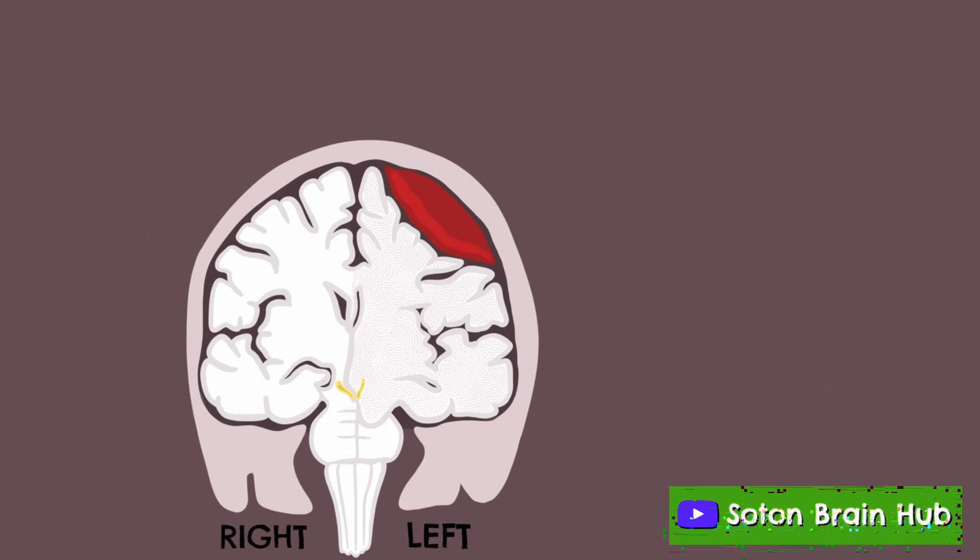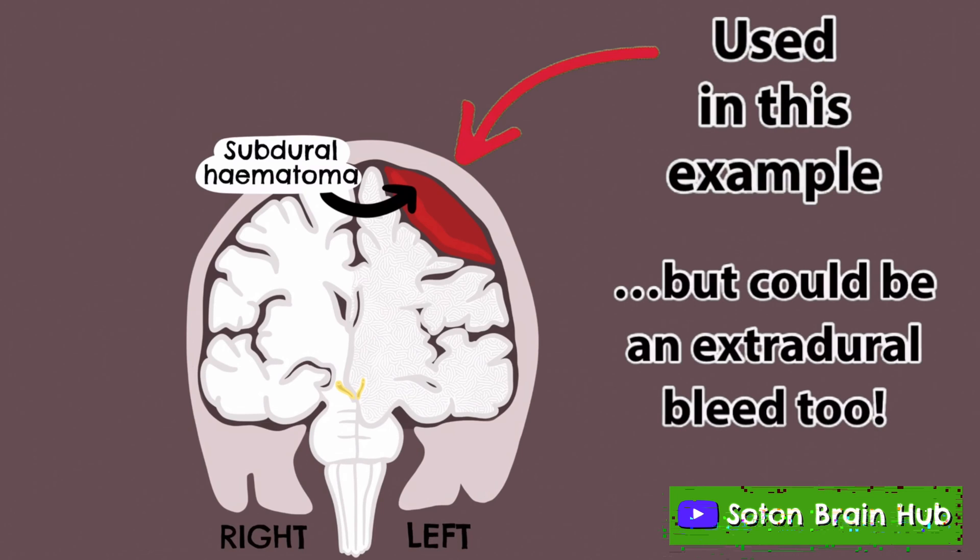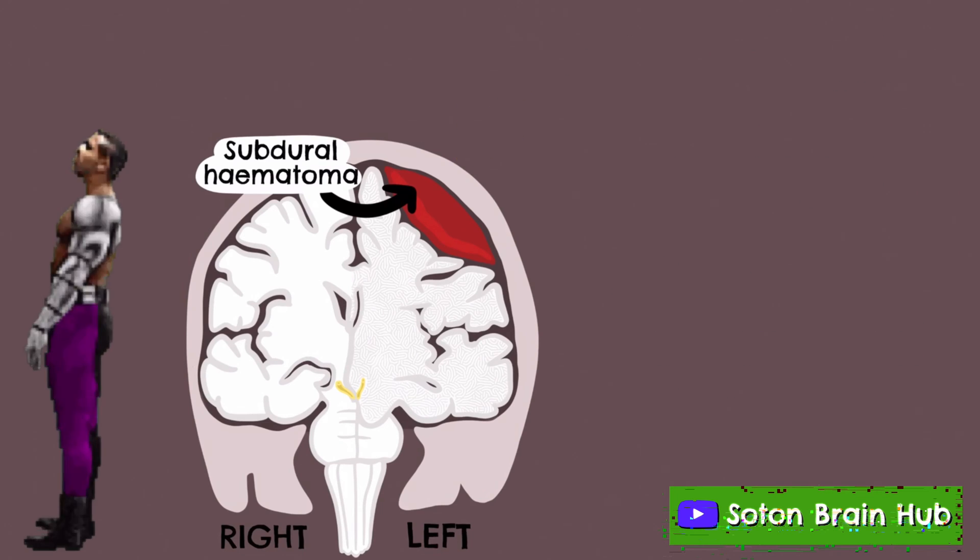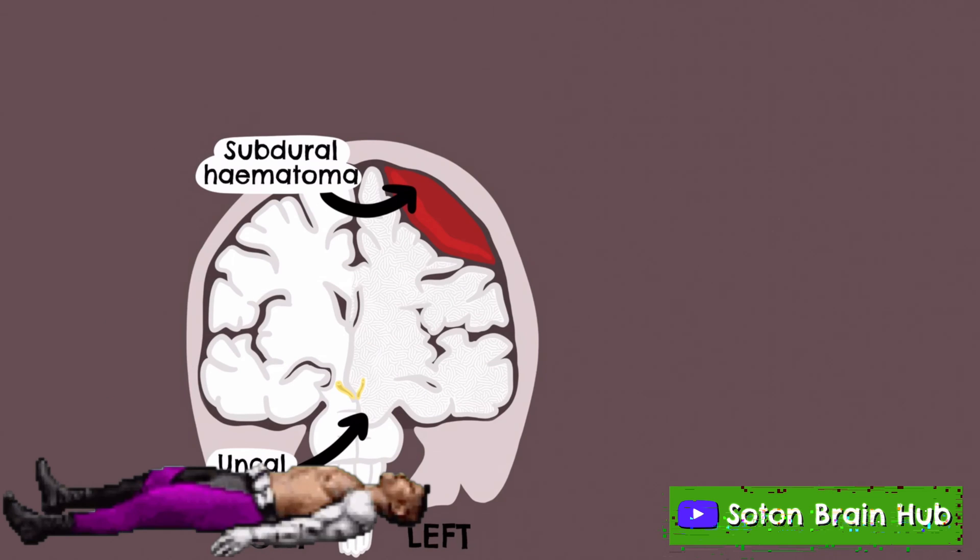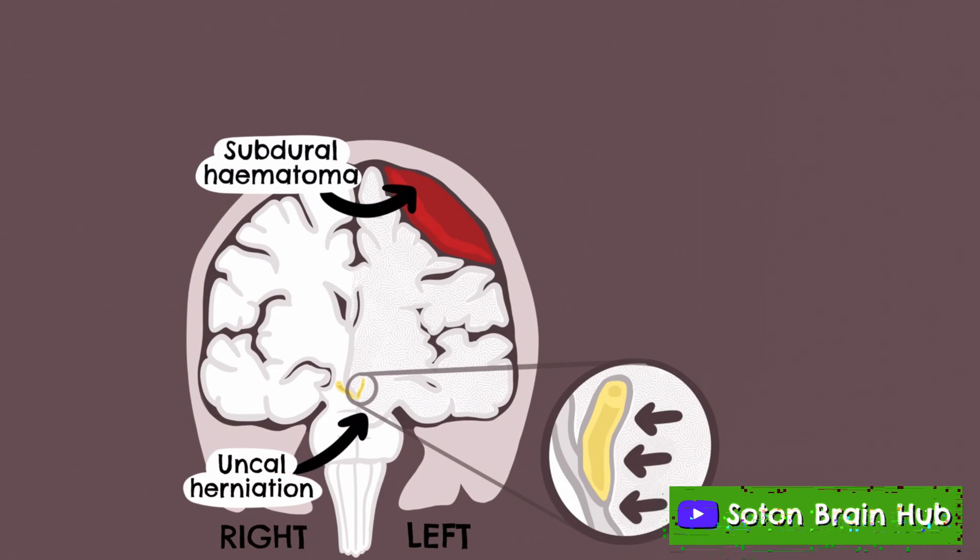One distinctive feature of uncal herniation is an acute loss of consciousness due to compression of ascending arousal pathways with an associated ipsilateral pupil dilation,